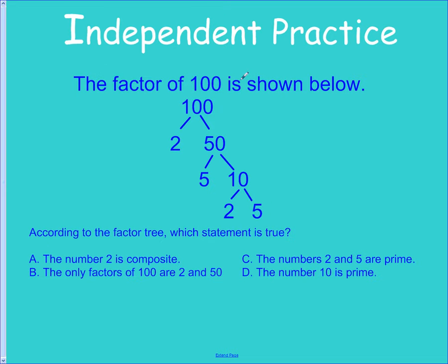So here we have a factor tree. 100 is broken into 2 and 50. 2 is prime, so we'll leave it. 50 is 5 times 10. 5 is prime. 10 is 2 and 5.